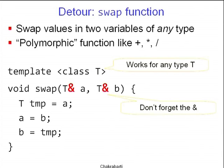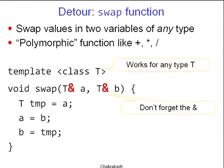Suppose we want to declare a polymorphic swap function — polymorphic means it should work for variables of any type. I start out saying template <class T>, which means the following function is polymorphic and should work for any type T. Then I declare the return type as void, since swap doesn't return anything. I give it two arguments a and b, both references to variables of type T. You can't forget the ampersand, otherwise changes inside the method will stay inside the method and nothing will be seen outside. Inside the code: a variable temp of type T is assigned to a, a becomes b, and b becomes temp.